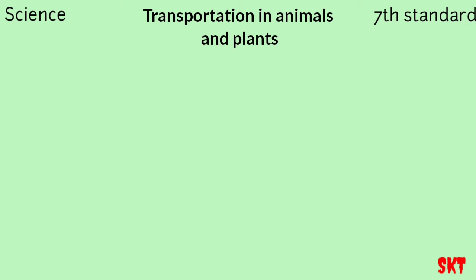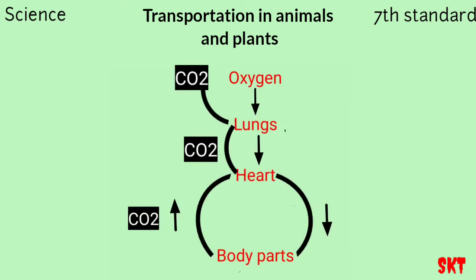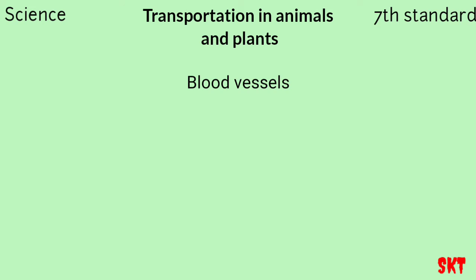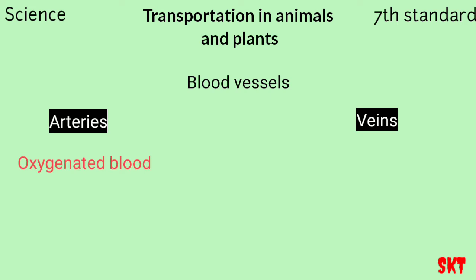Now we shall look at the blood vessels — how blood flows in our body. Blood transports oxygen to all parts of our body and collects carbon dioxide from all parts. These two processes occur simultaneously. If blood containing oxygen (oxygenated blood) mixes with blood containing carbon dioxide (deoxygenated blood), that blood is of no use. So we have two separate vessels — arteries and veins. Arteries carry oxygen-rich blood and veins carry carbon dioxide-rich blood.